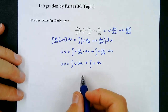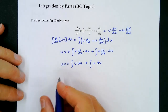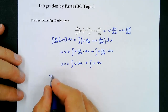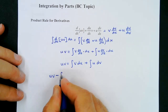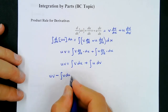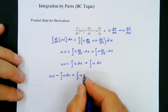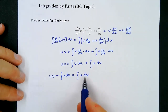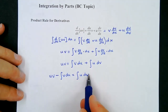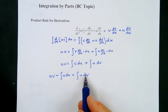Then we take the integral of v du and move it to the other side, so uv minus the integral of v du equals the integral of u dv. Notice this is a product where u and dv are two different things.